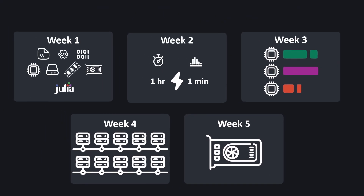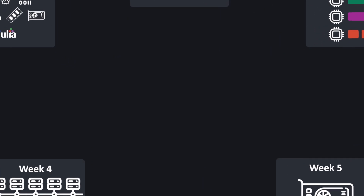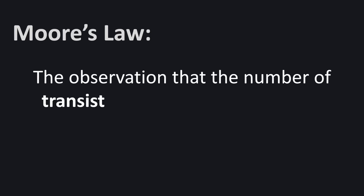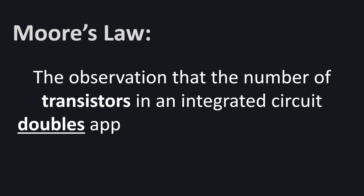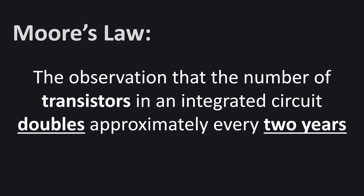Now we've looked at the syllabus, I'd like to take a second to look at the historical trend in computing hardware, which will help shine a light on why you might find the skills in this module valuable. Many of you will have heard of Moore's law, which is the historical observation that the number of transistors in an integrated circuit tends to double approximately every two years. The transistors are the building blocks of modern processors, and in general the higher the number of transistors, the more powerful a chip can be.